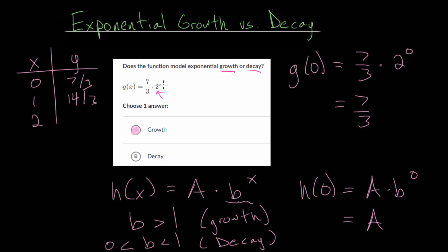If we plug in 2, we have 2 squared, which is 4, so you have 4 times 7 thirds, which is now 28 over 3, and as x increases, the y value will get bigger and bigger. If we're looking at decay, it would get smaller and smaller. So now, with this information, let's keep moving on these.